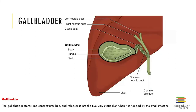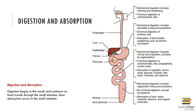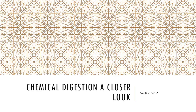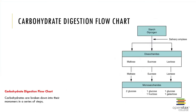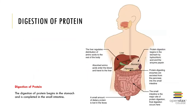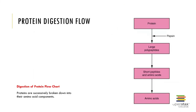Here's a close-up look at the anatomy of the gallbladder. This goes into more detail about the processes of digestion and absorption as they relate to chemical digestion in our bodies, a little more detail on digestive secretions and the absorption of water, and a flow chart to bring in carbohydrate digestion.